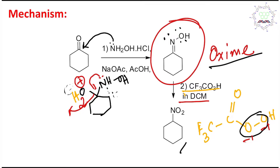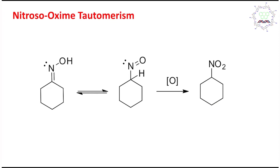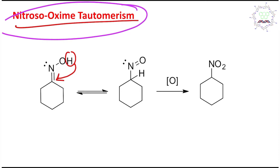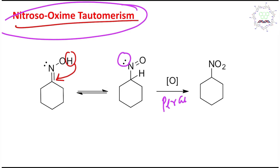After oxidation, the oxime is converted into a nitro compound. You may have some confusion about oxime going to nitro — to understand that better, look at nitroso-oxime tautomerism. In this tautomerism, the hydrogen shifts from one position to another, converting the C=N–OH (oxime) into N=O (nitroso) form. From that nitroso form, the lone pair reacts in the presence of the peroxy acid.